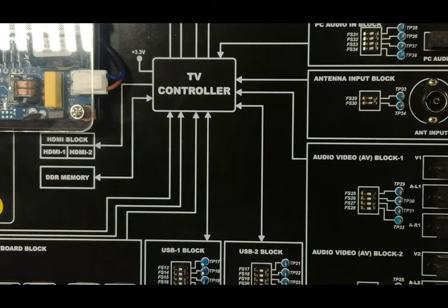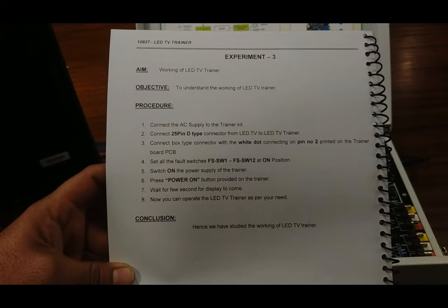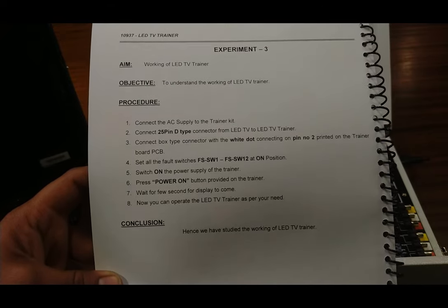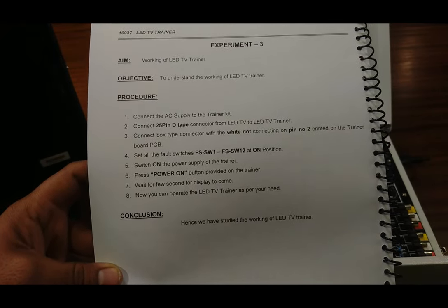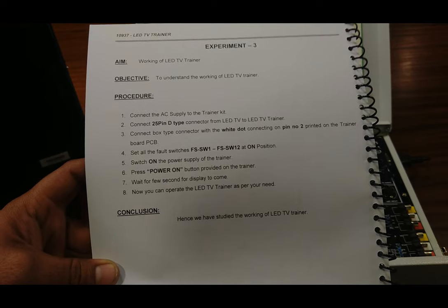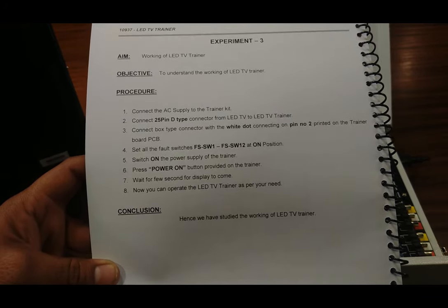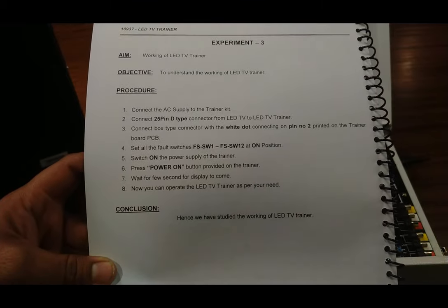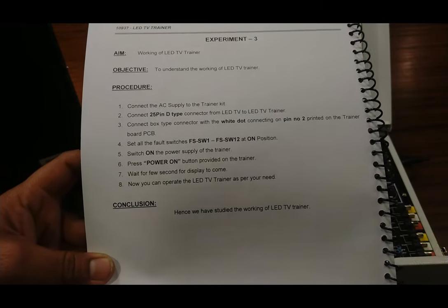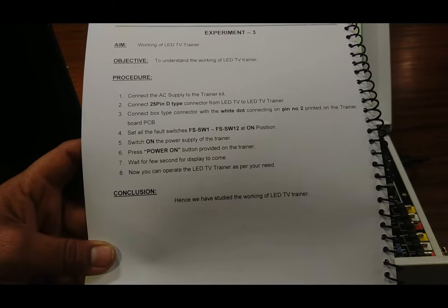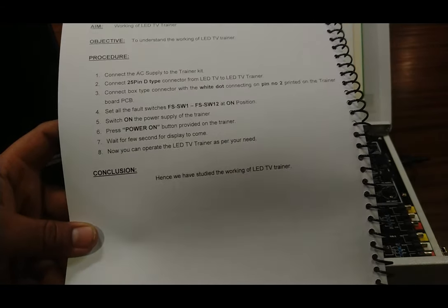Now we will study the test points and fault conditions in the next experiments. Moving to the experiment on working of the LED TV trainer, we follow the procedure in the user manual: connect the trainer kit to AC supply, connect the 25-pin D-type connector from the LED TV to the LED TV trainer, connect the box-type connector with the white dot to pin number two, set all fault switches to ON position, then power on and observe LED working on the monitor.